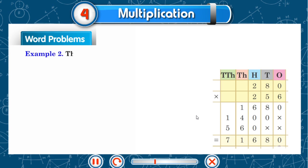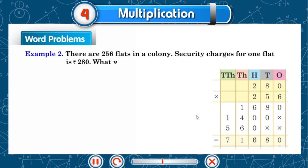Example 2: There are 256 flats in a colony. Security charges for one flat is 280 rupees. What will be the total security charge of all the flats?